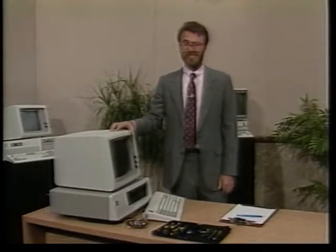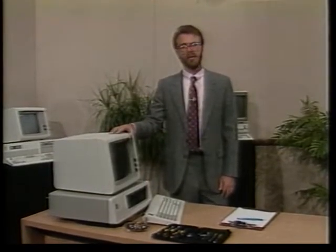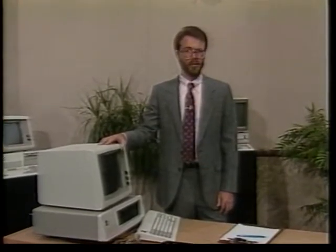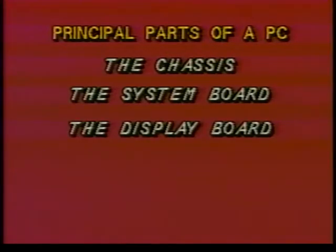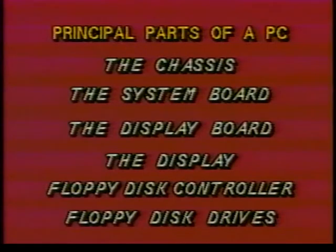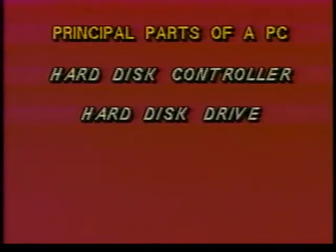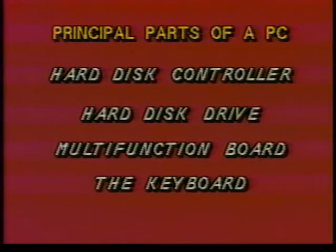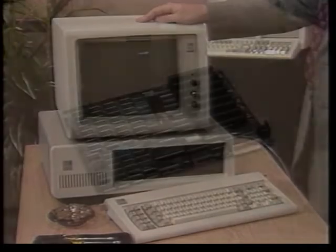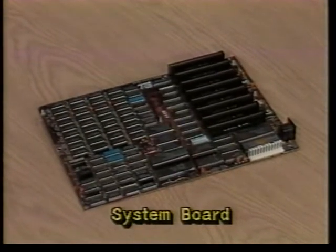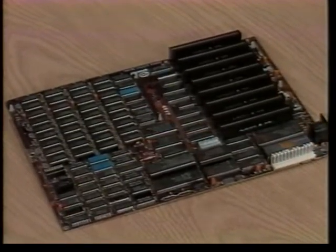In a few minutes, I'm going to show you how to disassemble and reassemble a PC. In the process, I'll explain what everything in the PC does. Before I do that, I'd like to prepare you by briefly describing the parts of the PC so you know what to expect to see. Every PC is composed of just a few major parts. The principal parts of the PC are the chassis, the system board, the display board and the display, the floppy disk controller and floppy disk drives, perhaps a hard disk controller and hard disk drive, a multi-function board, a keyboard, and the power supply.